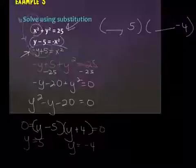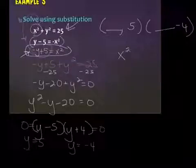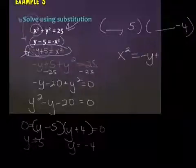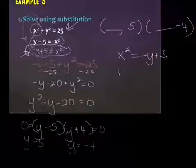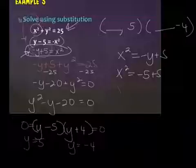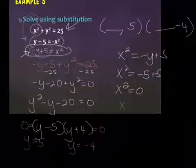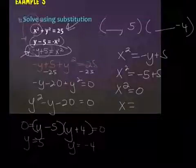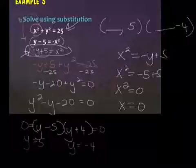This might be a little bit easier. x squared equals negative y plus five. So x squared with y equal to five would equal negative five plus five. x squared equals zero. x would equal plus or minus the square root of zero, which is just zero.